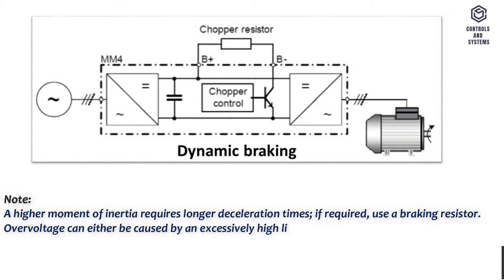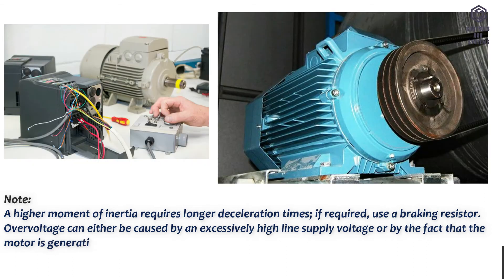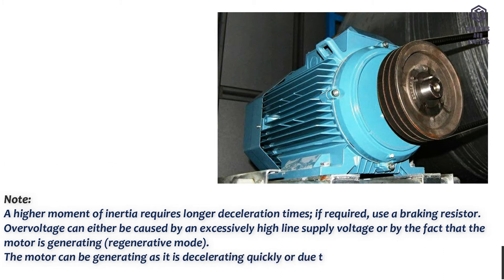Overvoltage can either be caused by an excessively high line supply voltage or by the fact that the motor is generating, regenerative mode. The motor can be generating as it is decelerating quickly or due to the fact that an active load is driving the motor.